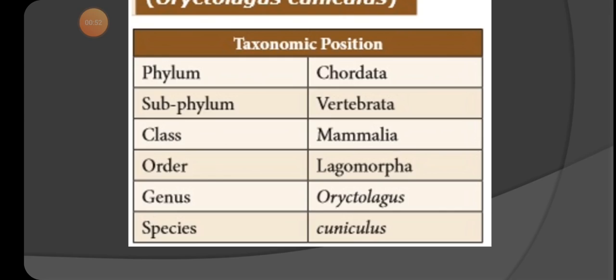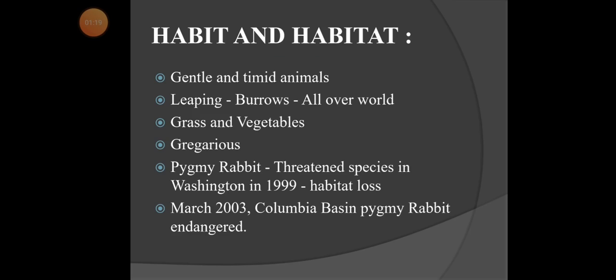The taxonomic position of rabbit: phylum is Chordata, sub-phylum is Vertebrata, class is Mammalia, order is Lagomorpha, genus is Oryctolagus, species is cuniculus. The last two names — genus and species — together form its scientific name: Oryctolagus cuniculus.